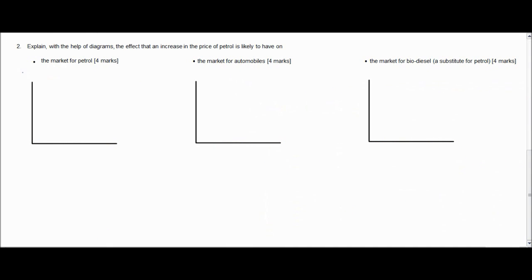The next part of this quiz asks students to explain the effect that an increase in the price of a product — specifically petrol — would have on three different markets. This part tested whether students could distinguish between a change in the price of a good, which causes a change in the quantity demanded, and a change in a non-price determinant, which affects the demand for the good. We're going to look at the effect of higher petrol prices on three different markets, the first being petrol itself.